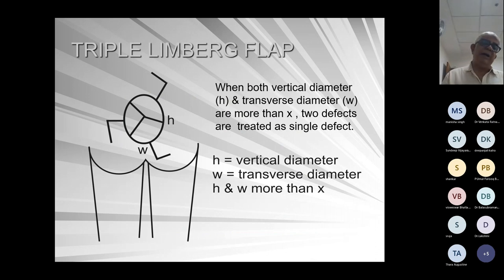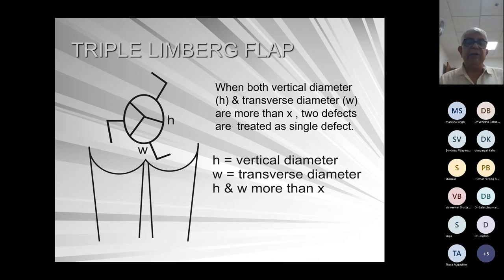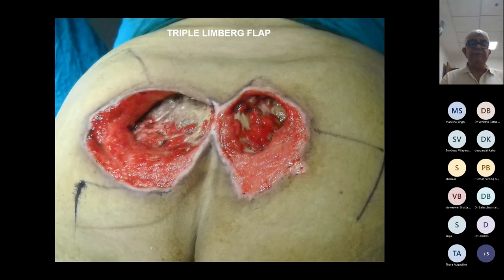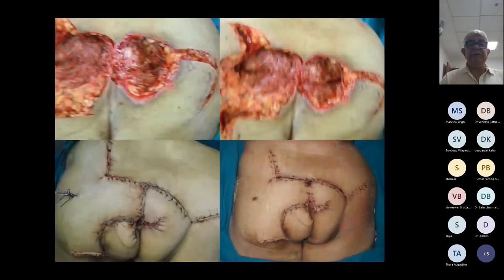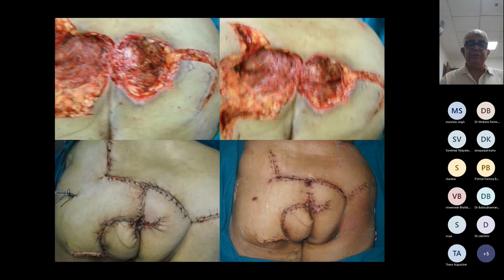Triple Limberg flap: when the width is more than 9 to 12 and height is also more than 9 to 12, two flaps are not enough because our flap length and breadth are equal. So a third flap has been designed and three flaps have been done. It is a bit tricky — the third flap has an increased chance of breakdown — but this is the option.